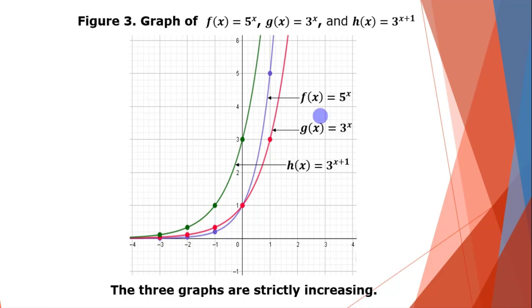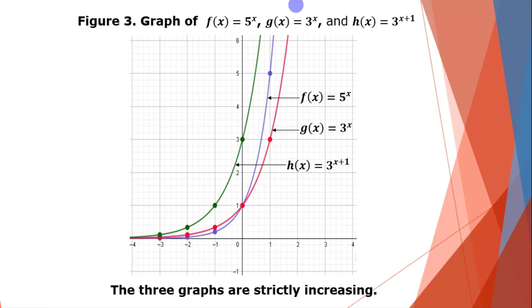For g(x) = 3 raised to x — the red-colored curve: at x = −3, g = 1/27; x = −2, g = 1/9; x = −1, g = 1/3; x = 0, g = 1; x = 1, g = 3; x = 2, g = 9, and so on.